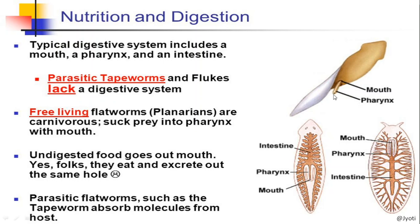There is a single opening serving as both mouth and anus. Parasitic flatworms like flukes and tapeworms absorb molecules directly from the host through their body surface.